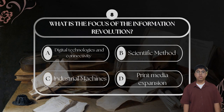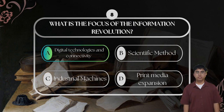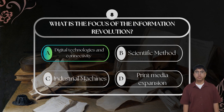For question number eight: what is the focus of the Information Revolution? The correct answer is digital technologies and connectivity. The Information Revolution centers around the rapid development of computers, the internet, and mobile technologies. These tools have transformed the way we communicate, work, and access knowledge, creating a more connected, information-driven society.